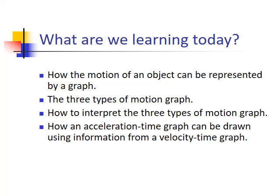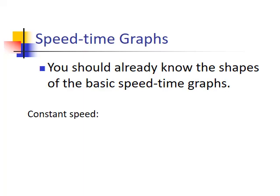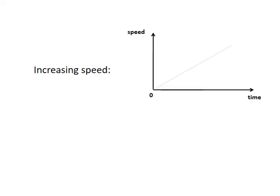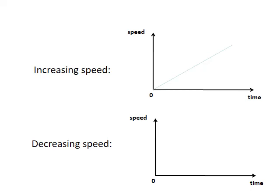Graphs are not new to Higher Physics — you will have come across these graphs at National 5 too, whether it's a speed time graph or a velocity time graph. Starting with a recap: if you've got a constant speed, we have a flat horizontal line. If something is accelerating, we could have a straight diagonal line — that would be a constant acceleration. If it's decelerating, the line slopes downward — that is a constant negative acceleration.